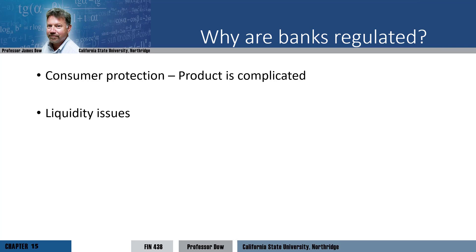Another problem with banks is that their primary asset, loans, are illiquid. If everyone tries to withdraw their deposits from a bank at once, it won't have enough cash on hand to meet this demand, because the money is tied up with loans. We call this a problem of illiquidity. Another difficulty is that problems at one bank can spread to affect other banks, so a few bad banks can put the entire banking system at risk. We call this systemic risk, and we'll see how this can result in a banking panic.